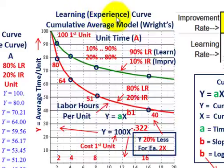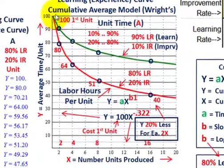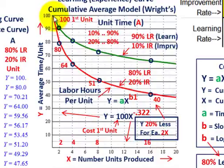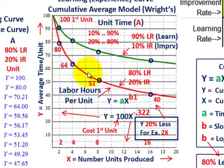What we're going to be going over here is a learning or experience curve, and we're going to be specifically looking at the cumulative average model, or the Wright's model. When we're talking about learning curves, this is where we start out with a new product or new production of a product, and it's going to take a certain number of hours to produce it. As we gain experience, the number of hours required to produce the product is going to decrease.